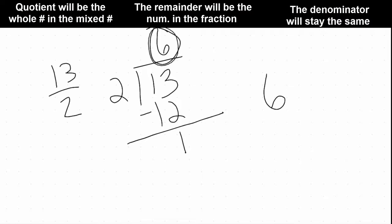Because 6 is our whole number quotient up here, we got 1 as our remainder, so that is our new numerator, and our denominator is going to stay the same, so it's going to stay 2. Therefore, our new mixed number is 6 and 1/2.